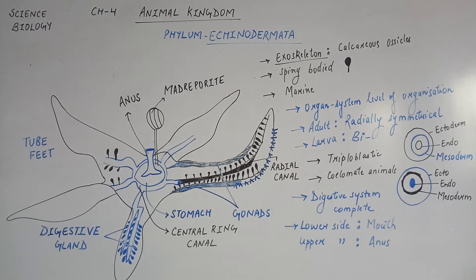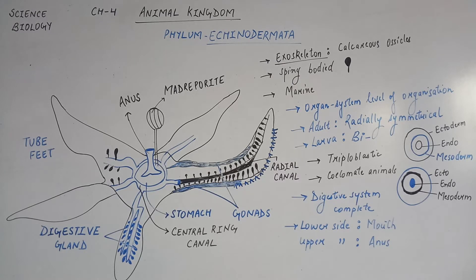ये Organisms Triploblastic होते हैं, मतलब इनका Embryonic Development जो होता है वो तीन Germ Layers से होता है. जैसे कि आप Diagram में देख सकते हो - Ectoderm, Endoderm और Mesoderm. Triploblastic Organism में Mesoderm की जो Layer होती है वो पूरी तरह से Present होती है. और यह हम बात कर रहे हैं Embryo के बारे में - Embryo की Third Layer, Mesoderm, is Completely Present.